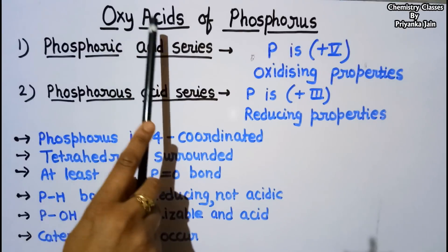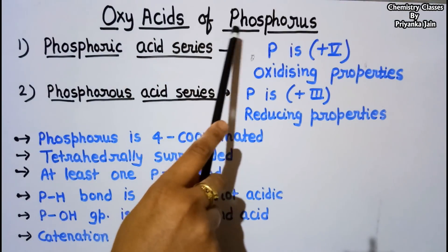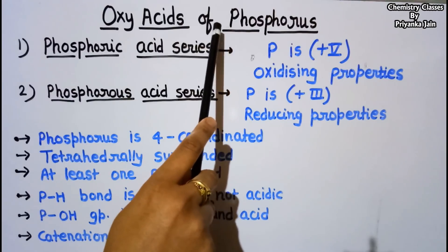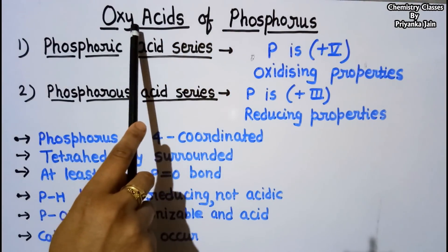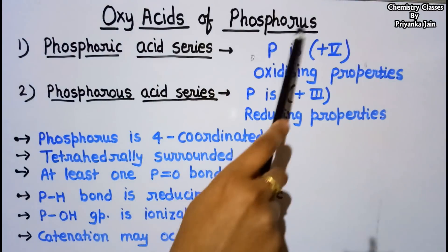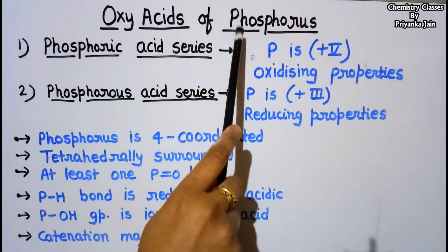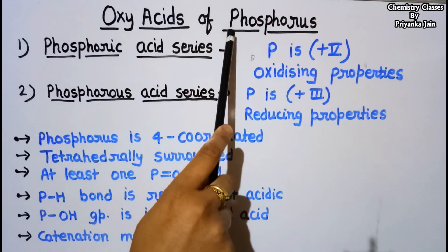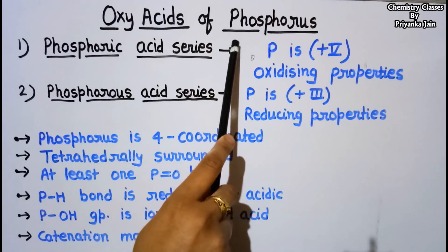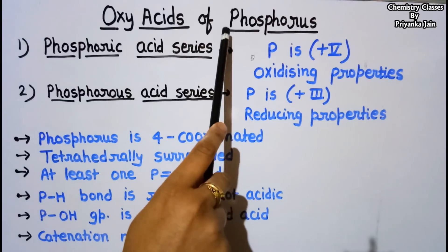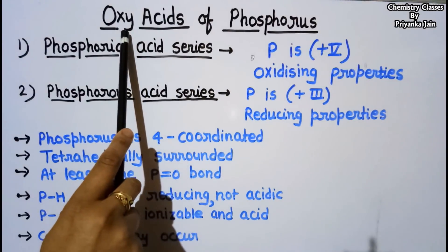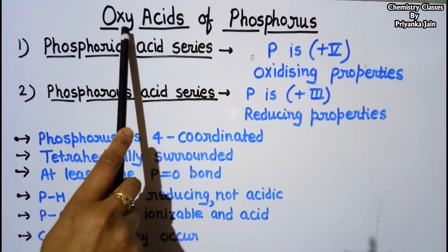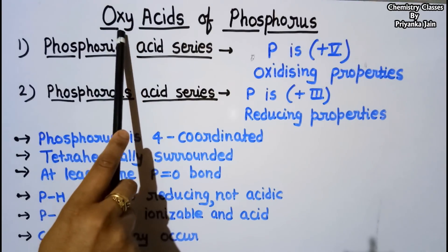Phosphorus, an element in group 15, has a very strong tendency to form oxy acids because phosphorus possesses a vacant d orbital, so it can show several oxidation states like +3, +4, and +5. In the case of nitrogen, nitrogen does not possess the d orbital, so it does not form oxy acids.